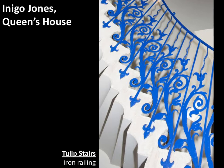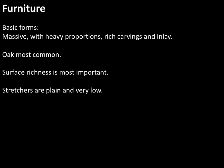Let's move along and think about some furniture. Design-wise, we're looking at very basic forms that are going to be massive and rectangular. The proportions are heavy, with carvings and inlay. We have a lot of oak in England, so that becomes the predominant wood in furniture. Because everything is rectilinear and heavy, any decoration is on the surface — so surface decoration is what's most important. On tables and chairs, the stretchers are very plain and very low.